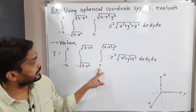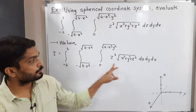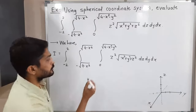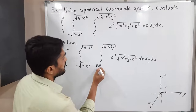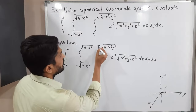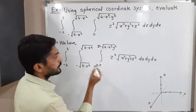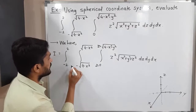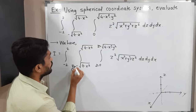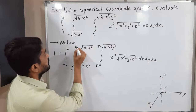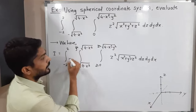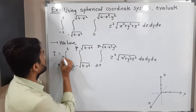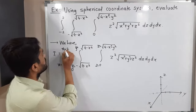As you can see here, the inner integration is with respect to Z, so these are the limits of Z. The middle integration is with respect to Y, so these are the limits of Y. And the outer integration is with respect to X, so these are the limits of X.